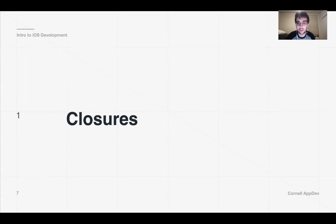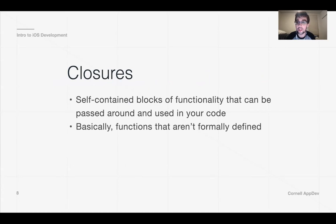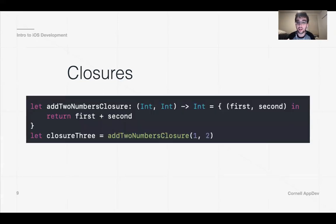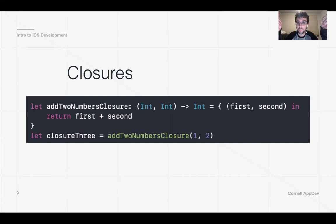Let's do some closure review before we start with the code, because networking has a lot of closures. Remember that closures are basically functions without names — you put code in braces and run it when called. For example, if you wanted a function that adds two numbers as a closure, you declare a variable that takes in two ints, returns an int with the arrow key, and between the braces put the parameters and return their sum. So let closure three equal add(1, 2), which evaluates to three.